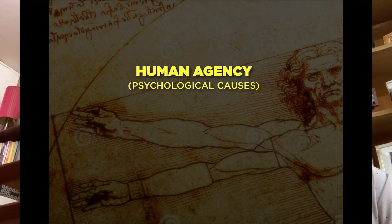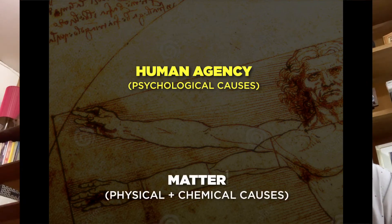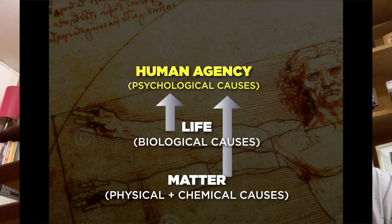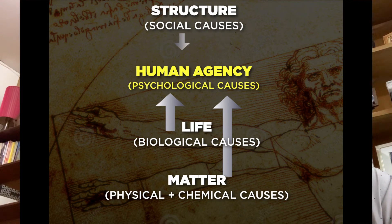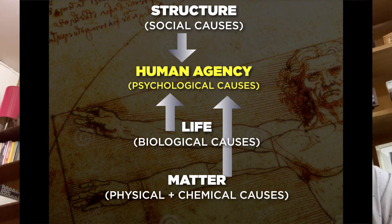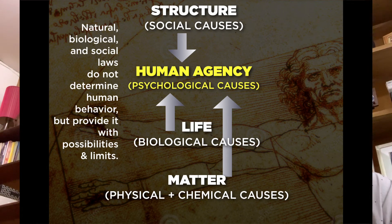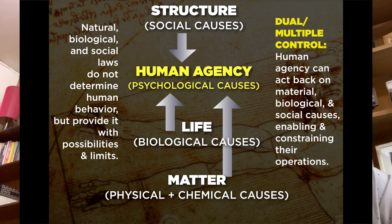Here's a diagram that might help clarify what we've been talking about. First we have human agency, which is a form of psychological causes. Human agency is affected by the physical, chemical, and biological. Moreover, human agency is also shaped by social causes. What this is showing us is that human agency is rooted not only in the physical, chemical, and biological, but also in the social. This picture seems to suggest that human agency is nothing but the product of matter, life, and structure. However, we know that the natural, biological, and social laws do not determine human behavior — they only provide it with possibilities and limits.